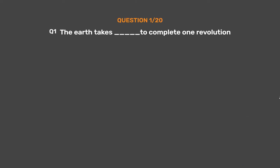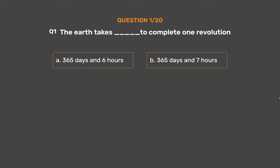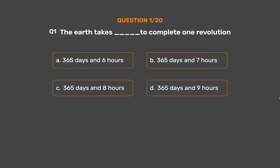Question number 1. The Earth takes underscore to complete one revolution. Option A: 365 days and 6 hours. Option B: 365 days and 7 hours. Option C: 365 days and 8 hours. Option D: 365 days and 9 hours.